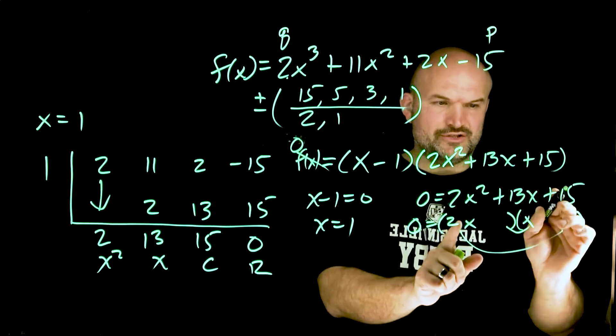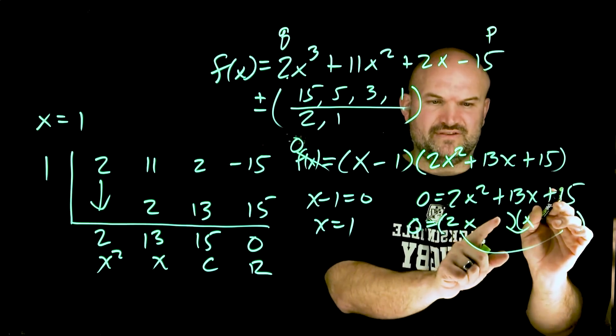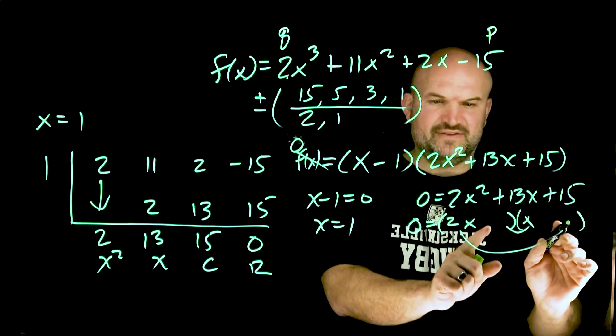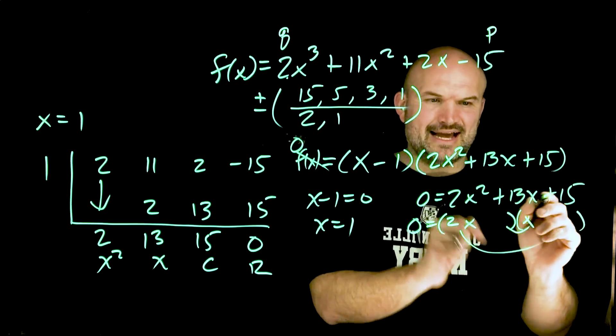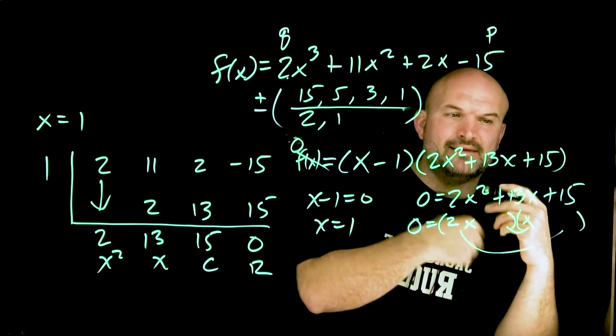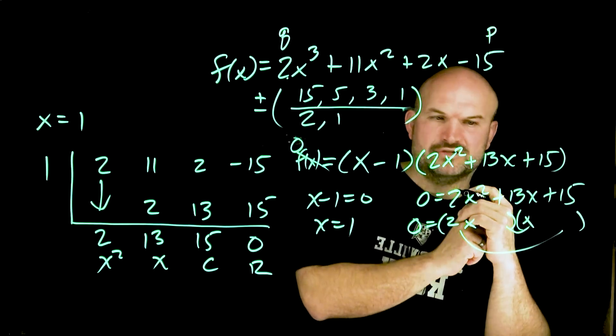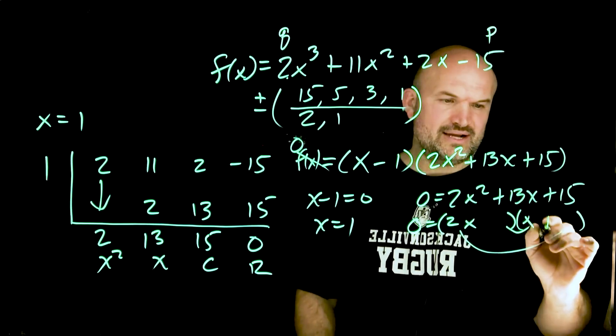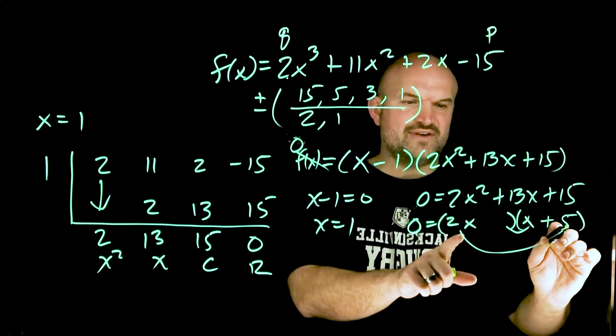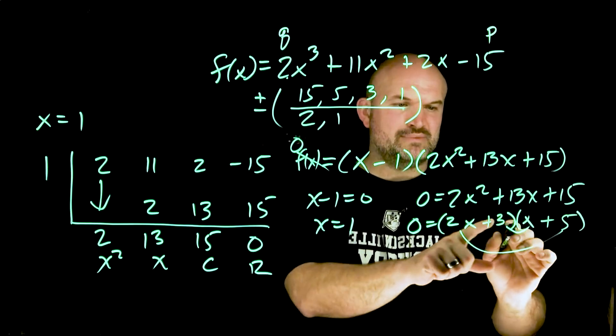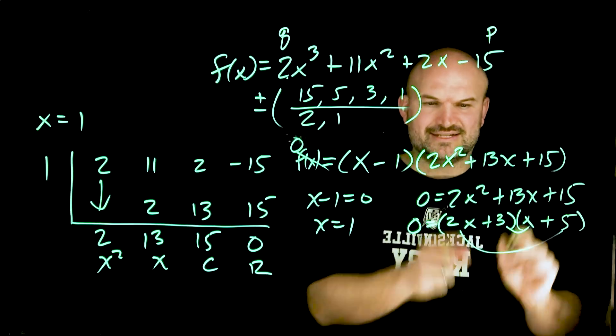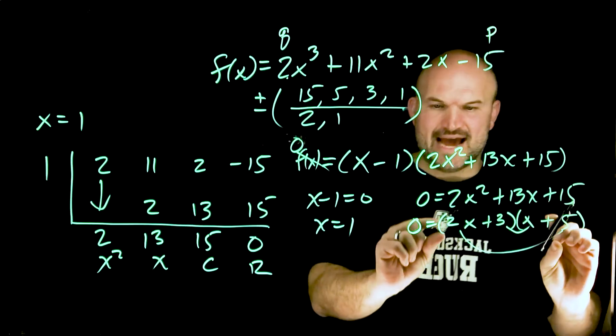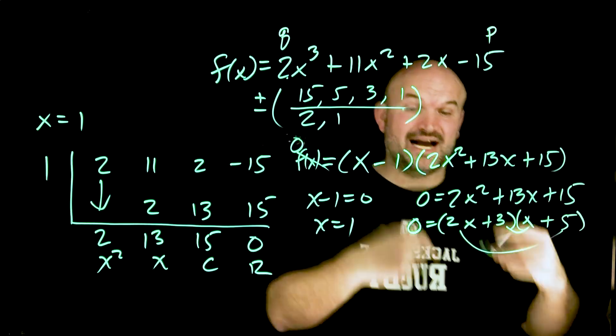What could I multiply by where my inner and outer products are going to add to 13x? I don't want to do 15 and 1 because that would give me 30. Since my constant is positive both my factors have to be positive and add to give me 13. I'm probably going to want to use 5 and 3. If I multiply 2x times 5 that's 10, and this would have to be 3. 10 plus 3 is 13x. That's my factored form.